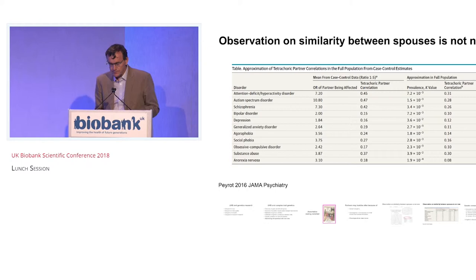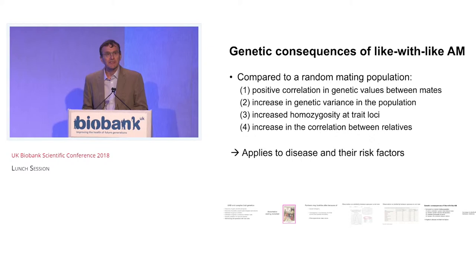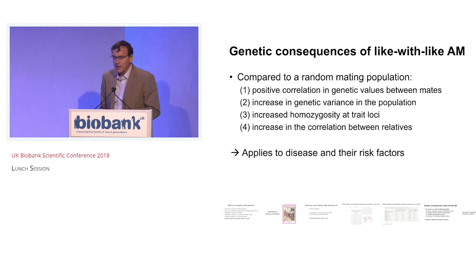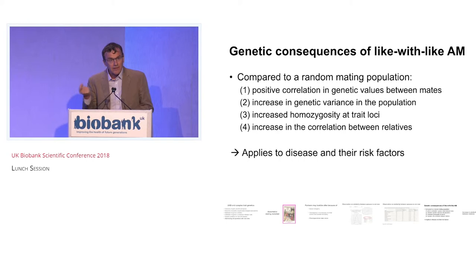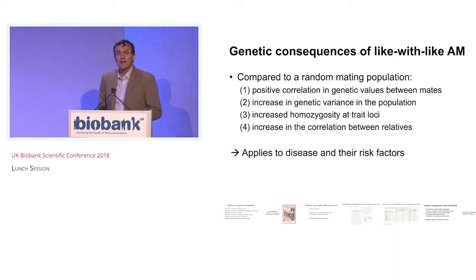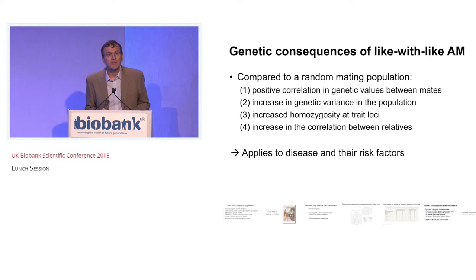So why do we care? Why is it interesting or important to study assortative mating? It has an influence on the population and on genetic variation. Compared to a randomly mating population, if there's like-with-like assortative mating, we get a positive correlation in the genetic predisposition to traits and potentially to disorders. We get an increase in genetic variation and heritability in the population, an increase in homozygosity at loci associated with the trait, and an increase in the correlation between relatives and in the recurrence risk for disease. And this applies not just to traits like human height, but also to disease and their risk factors.